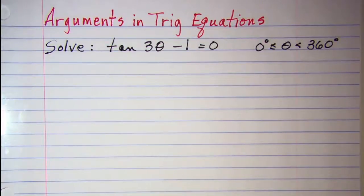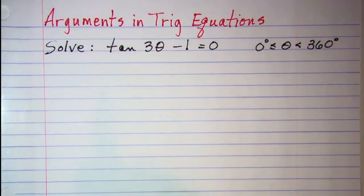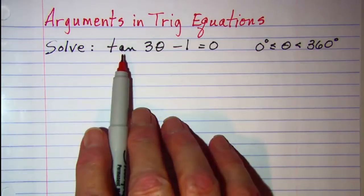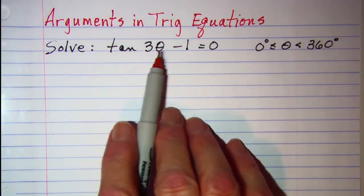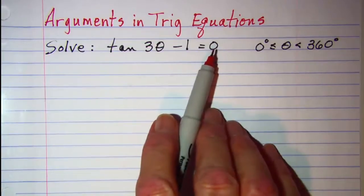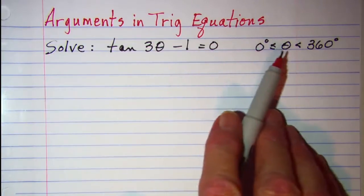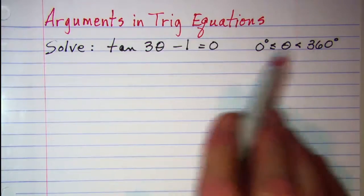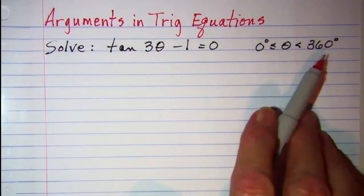In this video we'll be solving a trig equation in which we have to isolate the argument and continue solving. The problem we'll be doing is to solve tangent of 3θ subtract 1 equals 0, and we're solving for a domain θ between 0 and 360 degrees, including the 0 but not the 360.